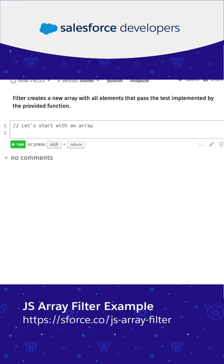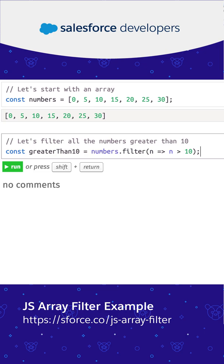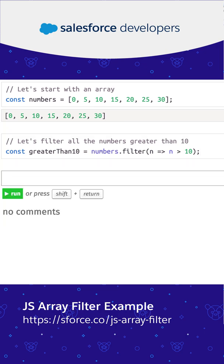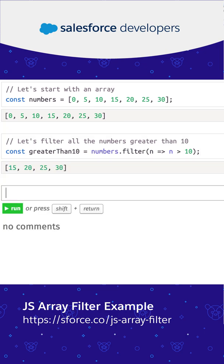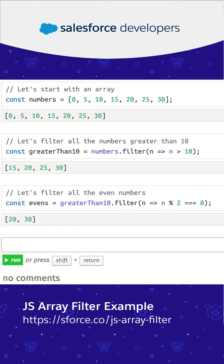Let's start with an array of numbers, then filter the array with all the numbers greater than 10. Since filter returns a new array, we can chain another filter operation. Let's filter the even numbers from the resulting array.